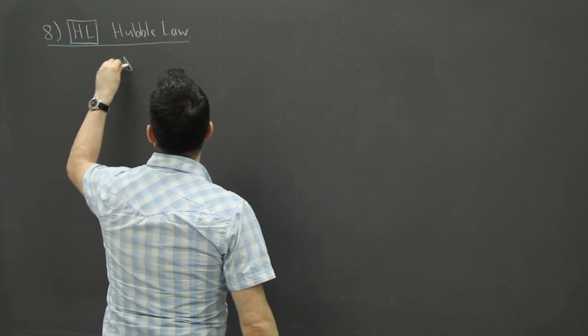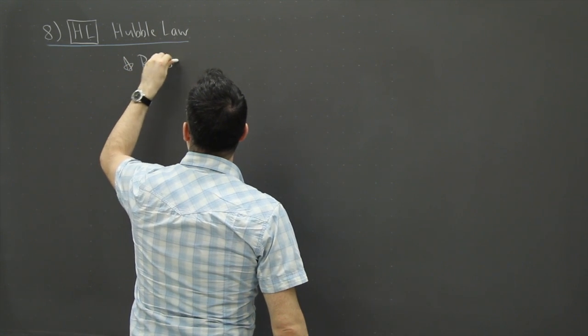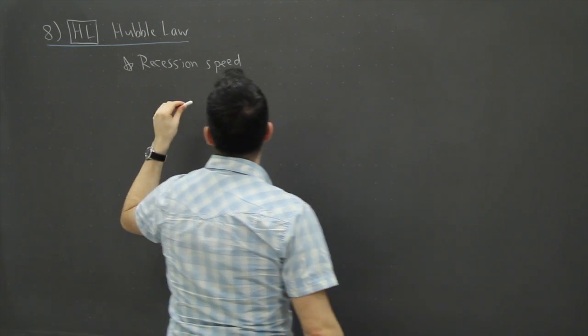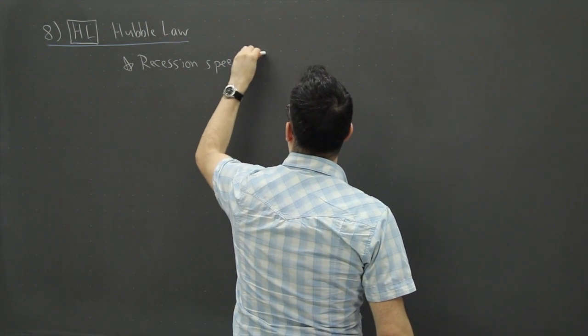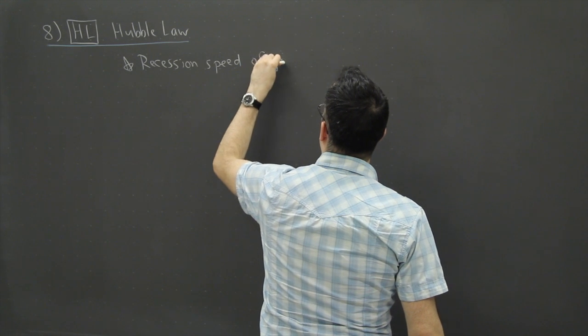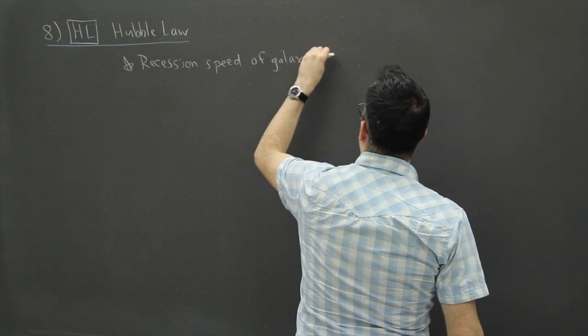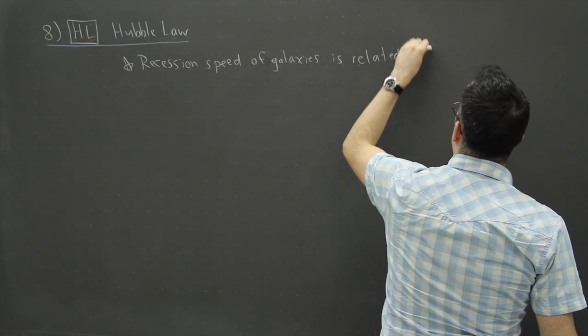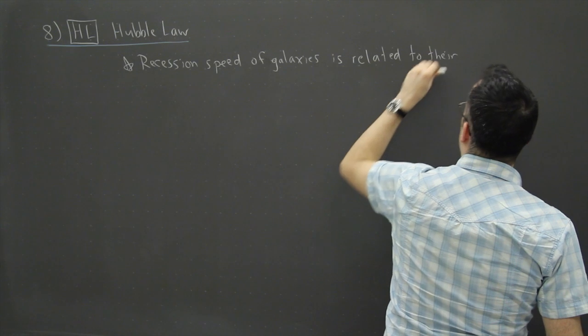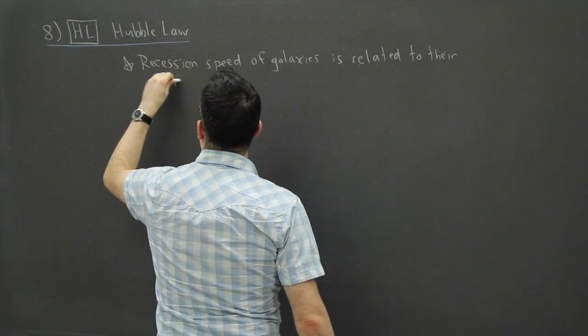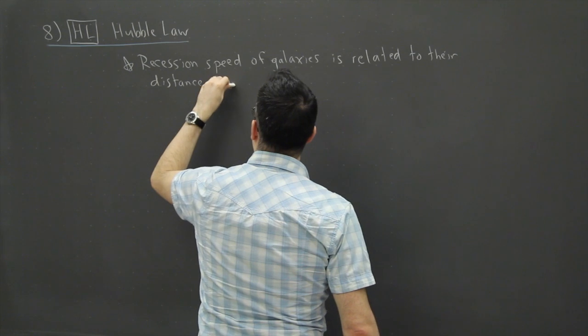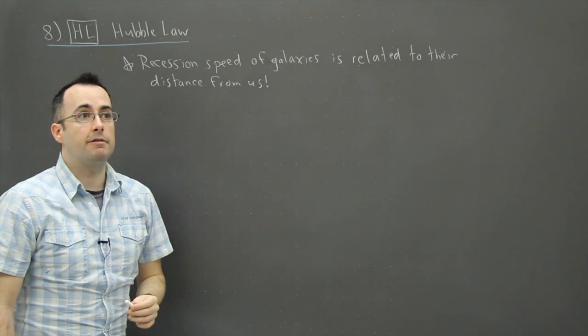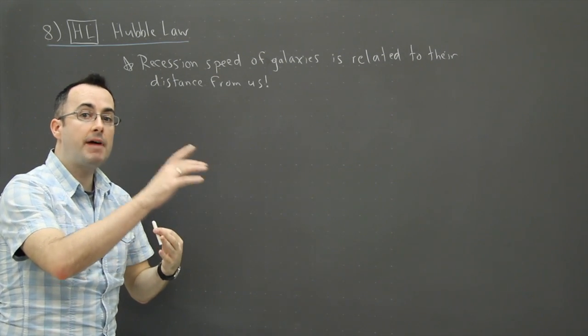So he noticed that the recession speed, in other words, the speed that the galaxies go away, is actually related to their distance from us. In other words, the further away something is, the faster it's going.